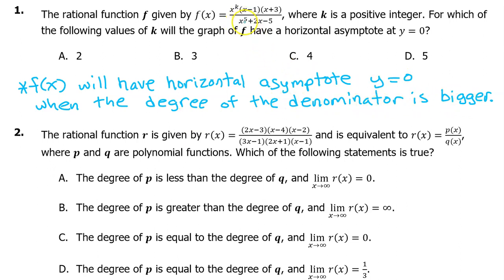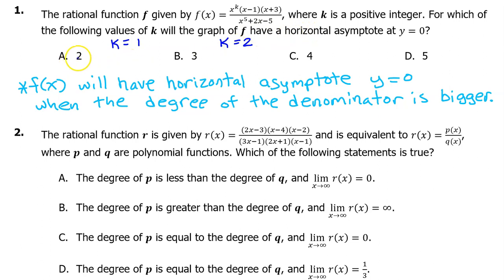The degree of the denominator is 5. So to have a horizontal asymptote y equals 0, the numerator has to have degree of 4 at most. Looking at the x minus 1 times x plus 3 part, that's x times x, which makes x squared. So the value of k could be 1 or 2. If k is 1, we have x to the third power. If k is 2, that's x to the fourth power. So the answer is A.